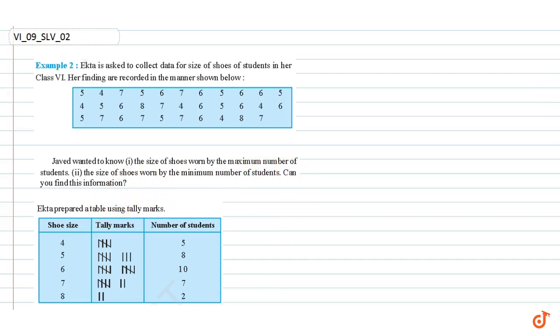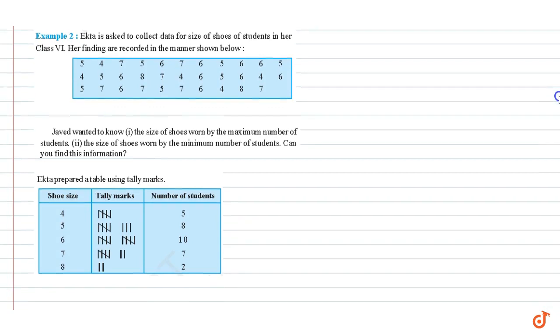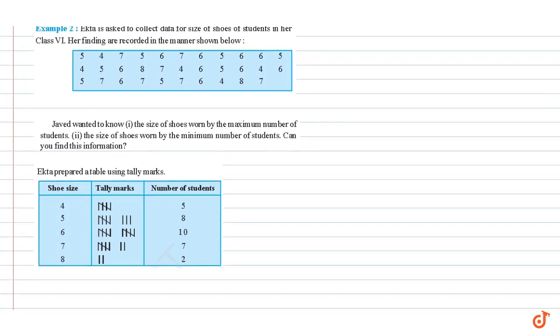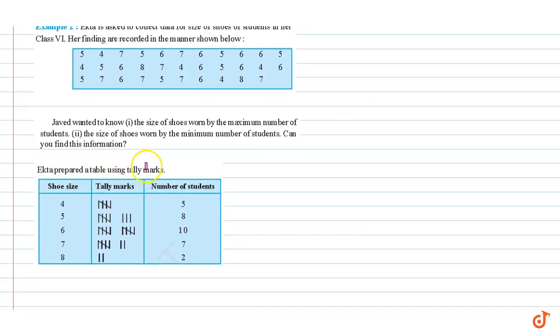We can prepare a table that contains the shoe size and the number of students. Ekta prepared a table using tally marks. Since there are five students with shoe size 4, we can count the number of students: 1, 2, 3, 4, 5. So the tally mark is 5. There are eight students with shoe size 5, so the tally mark is 4+5 plus 3 equals 8. In this way we can find out the number of students for other shoe sizes also. Now we can answer the questions.